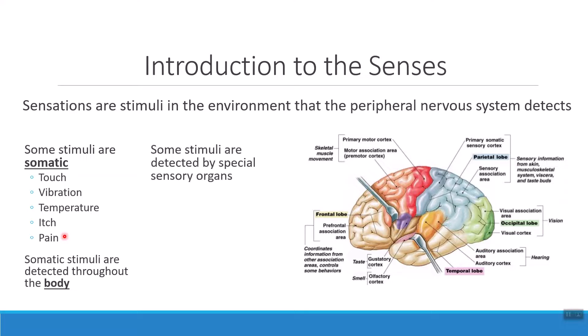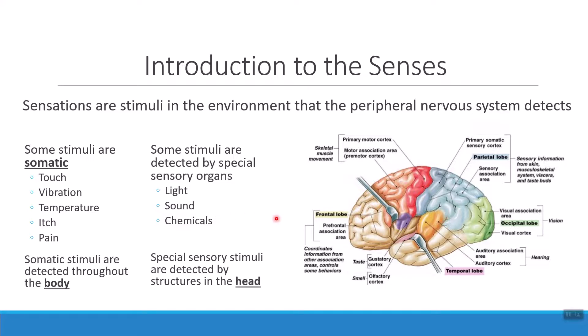But remember that we also collect other information that we call the special senses. Special sensory information is things like light, sound, and chemicals. Collecting this kind of information is the work of our special sensory organs, and these are things that are located in and around the head. Each type of special sensory information has its own special place in the brain to be processed. In the occipital lobe, the very back of the brain, this is where I'm going to process visual information — light.